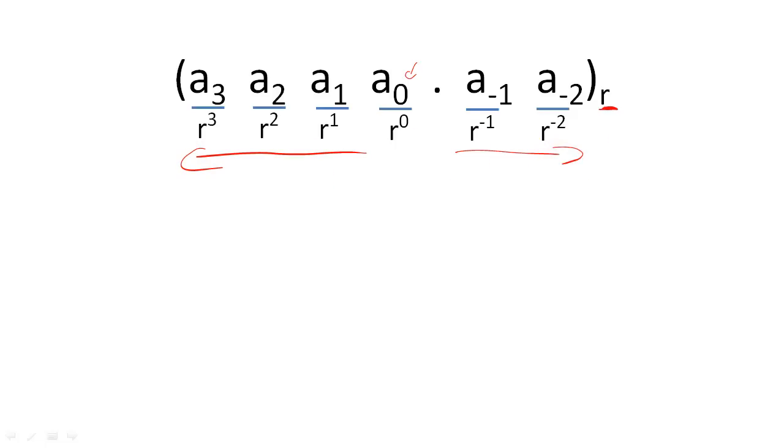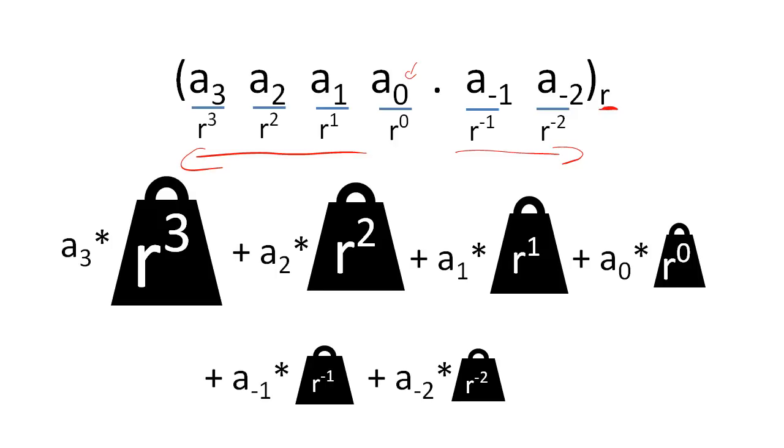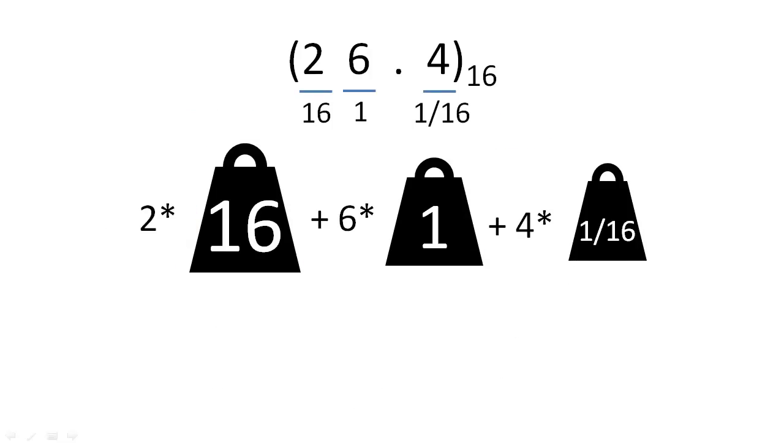We derive the value of a number by multiplying the symbol at a position by its weight. We then add all these products together. If we had this number in base 16, each symbol would be multiplied by the weight associated with their positions.